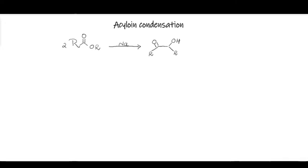The condensation of two ester molecules in the presence of molten sodium to give alpha-hydroxy ketones is known as acyloin condensation. The product, the alpha-hydroxy ketone, is actually known as the acyloin, and therefore the name acyloin condensation. In this video we're going to study the mechanism of acyloin condensation, so let's begin.